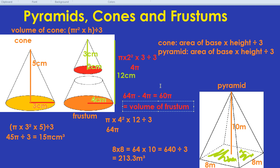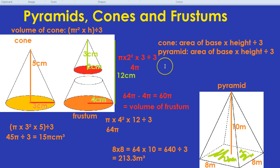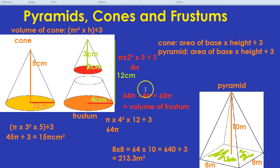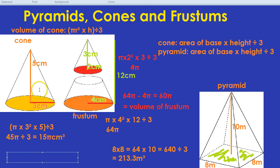One last thing before we go: how would you get the surface area of a cone? We know the area of the base is a circle. But just in case they ask you to find the curved surface area — and this is given in the formula sheet — the curved surface area, that part which goes all the way around like a label, has an area of pi r L.